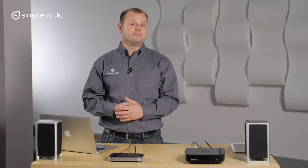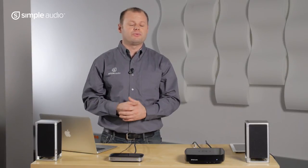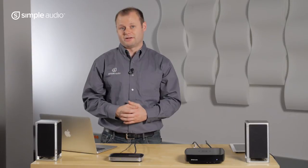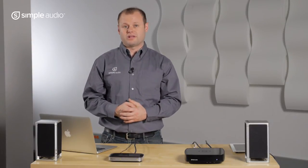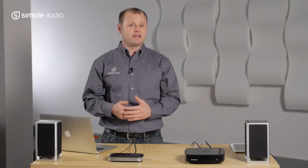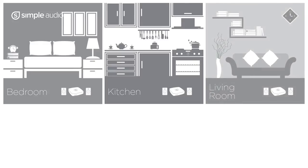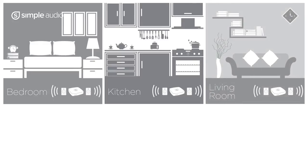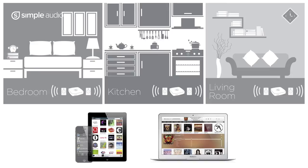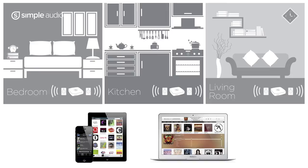When you'd like to listen to music in another room, just add another room player. Pairing room players is as easy as a few button presses. And because the room player supports powerline networking, there's no need to expand your home network or worry about any wireless ranges. Once you have a multi-room system set up, you can play music through any or all of the room players at the same time using your computer, tablet, or mobile phone as controllers.